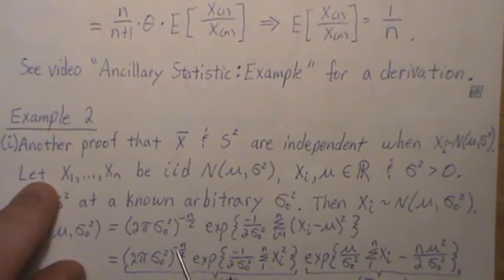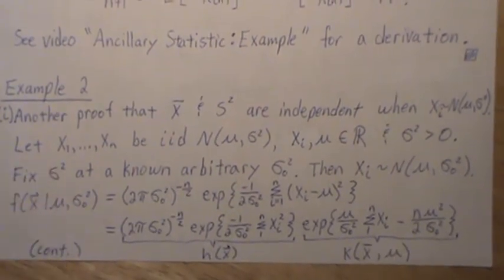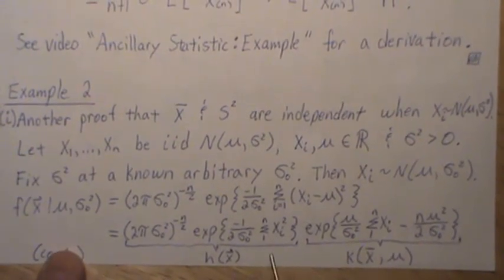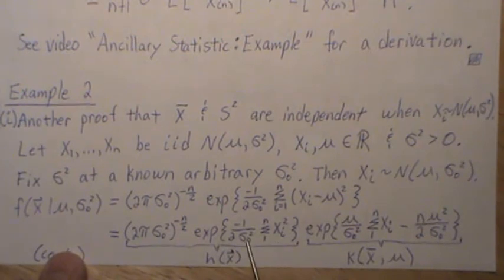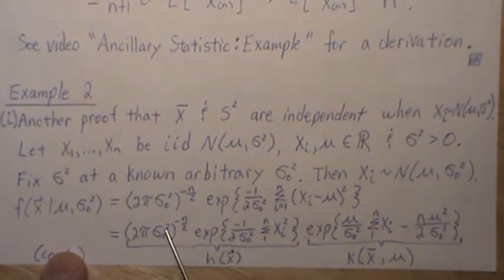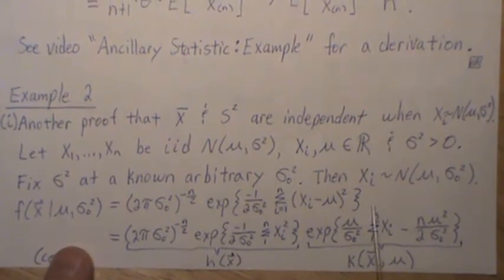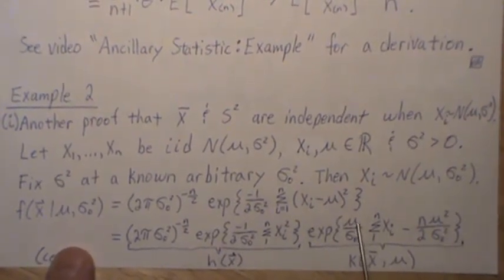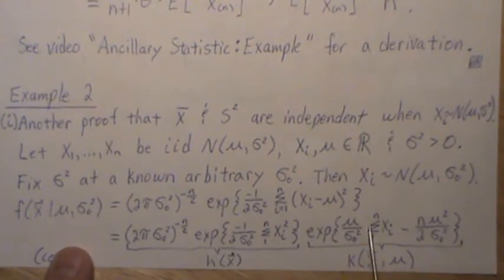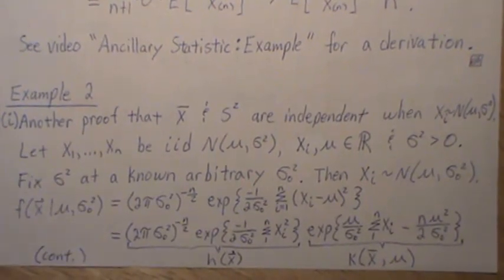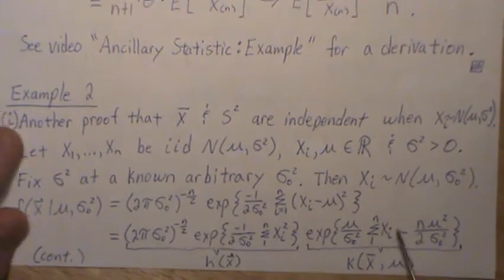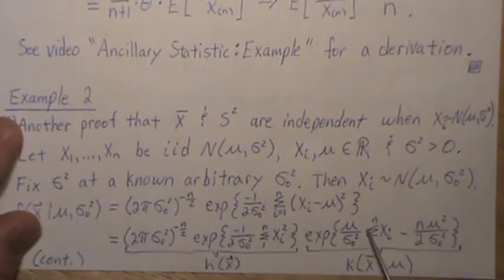And I separate them into this and this because it's two pieces. This is a function of only the X's. The sigma not squared is an arbitrary fixed constant. And then over here involves the unknown parameter mu and our data.